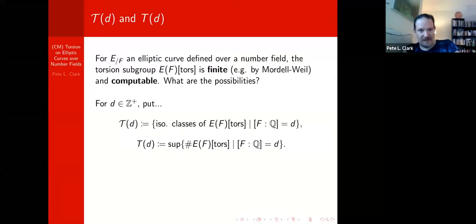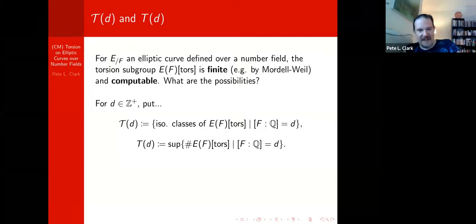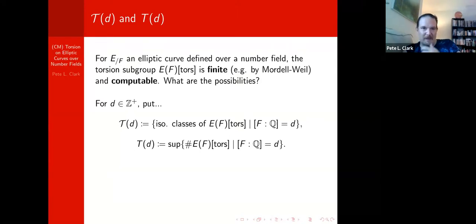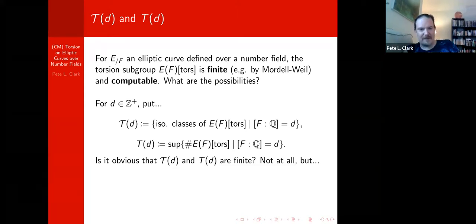For a positive integer D, I'm going to define two things. Cal T of D is the collection of torsion subgroups of elliptic curves over any and all degree-D number fields, technically up to isomorphism. So Cal T of D is a set of finite groups. And T of D is the supremum of the sizes of the torsion subgroups of elliptic curves over degree-D number fields. The first question you have to ask is: is it obvious that Cal T of D is a finite set, or that T of D is finite? The answer is it is absolutely not obvious that T of D is finite, but it's true.